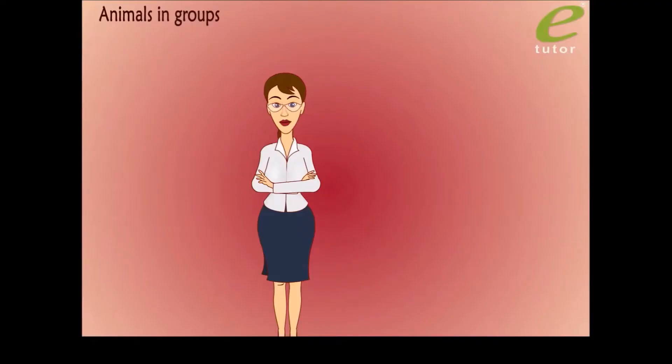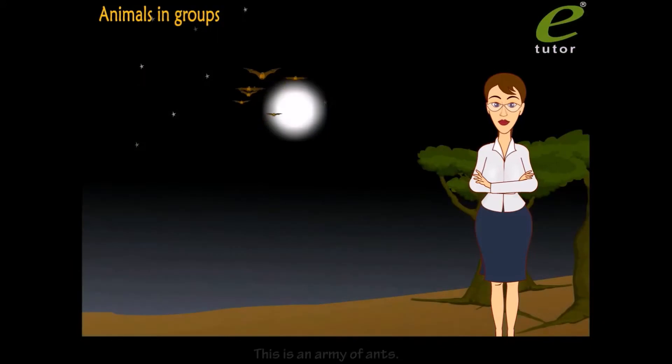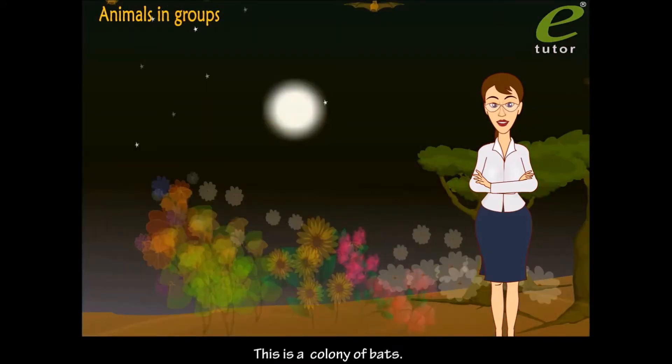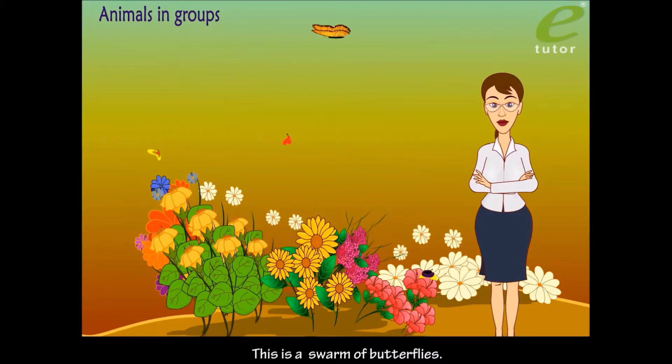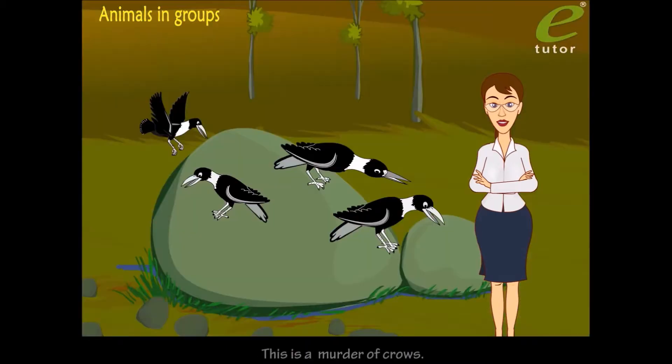Animals in groups. Let's see how to represent different organisms in groups. This is an army of ants. This is a colony of bats. This is a swarm of butterflies. This is an ambush of tigers.